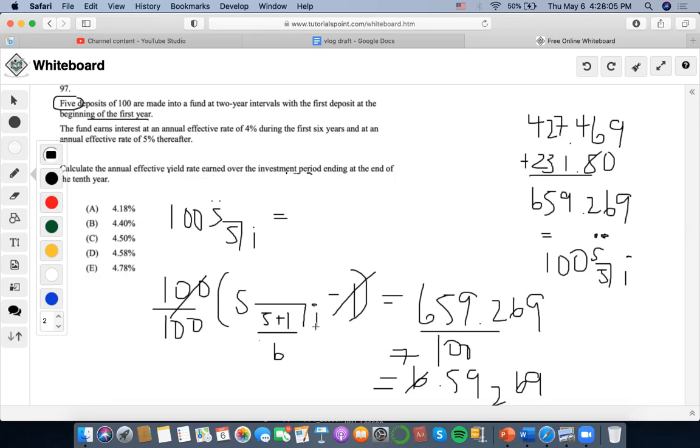Now I could find it using my TVM. I'm going to get one payment, six in the number of years, zero for the present value, and I'm going to find that the interest rate is 9.36%.